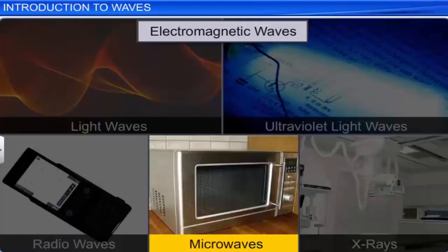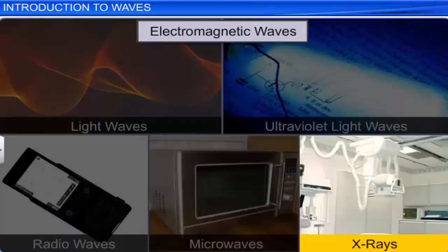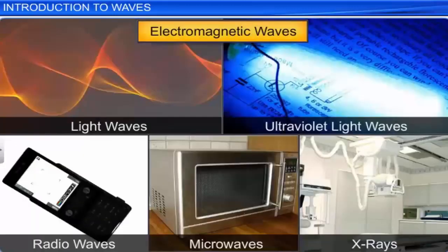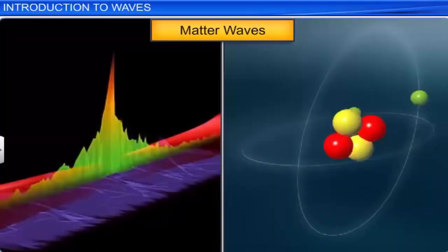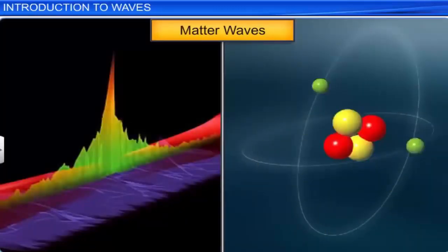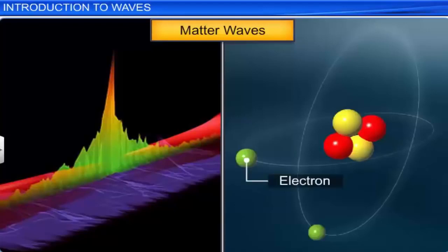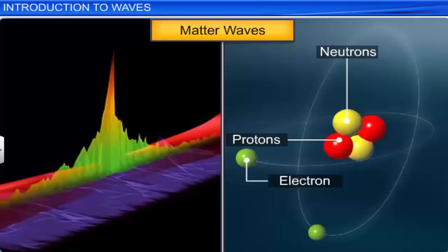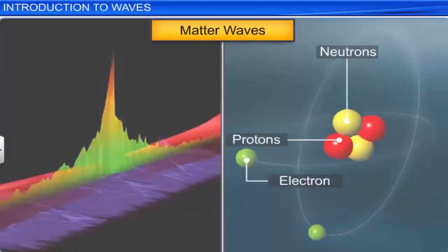Matter waves are associated with moving electrons, protons, neutrons, and other fundamental particles. The electron microscope works on the principle of motion of electrons, thereby constituting matter waves.